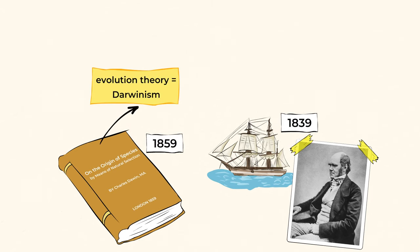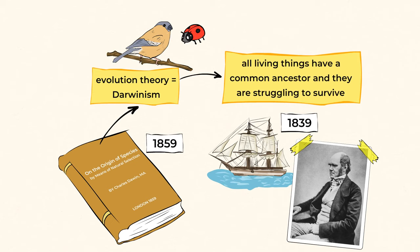Now, according to Darwin's evolution theory, also known as Darwinism, all living things have a common ancestor, and they are struggling to survive. Of course, individuals in the population differ, and the ones with the most useful characteristics for their environment have the best chance for survival.